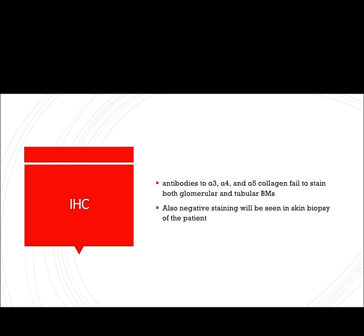For diagnosis, immunohistochemistry can be used. Commercially available antibodies to alpha 3, alpha 4, and alpha 5 collagen chains will not stain the glomerular basement membranes or tubular basement membranes because these chains are deficient. Similarly, negative staining will also be seen in skin biopsies of these patients, because in the skin's basement membrane, alpha 5 collagen chain is also present — so absent alpha 5 antibody staining will be seen in skin biopsies.